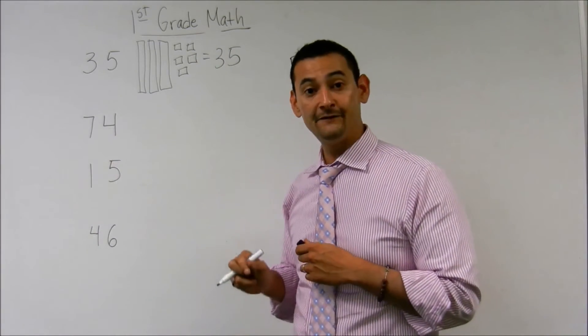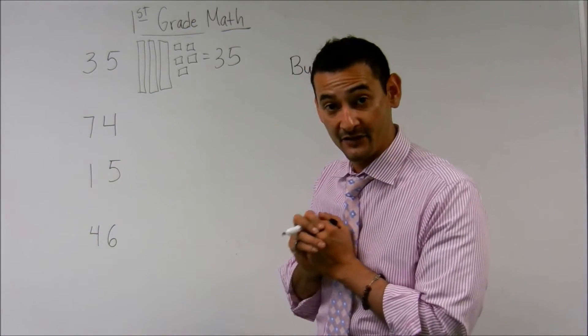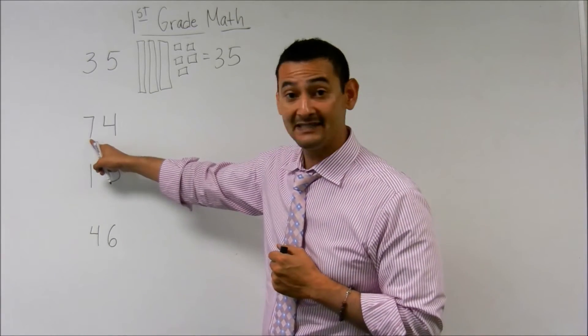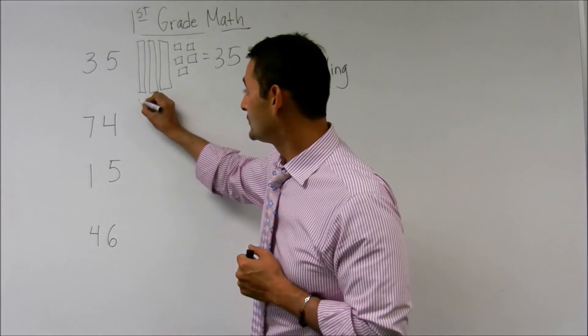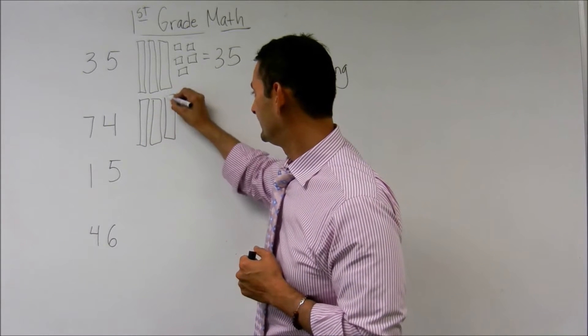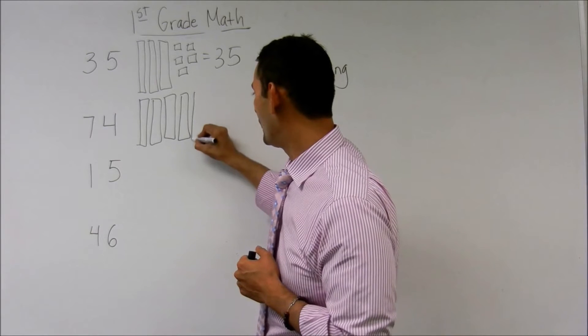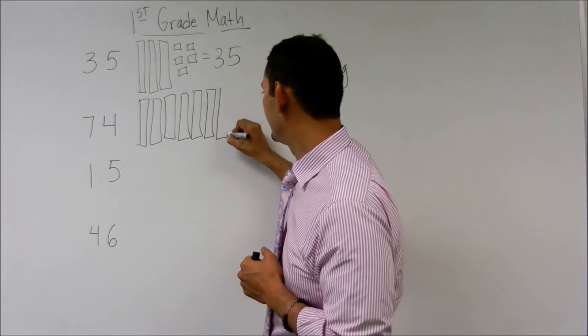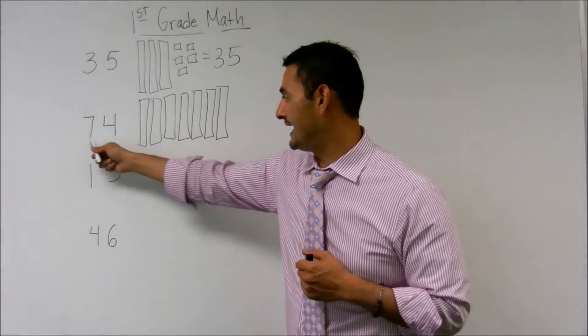Now let's take a look at seventy-four. We're going to bundle them together, remember? Here, I have seven in the tenths place. So we're going to do one, two, three, four, five, six, seven. I've got seven tenths.